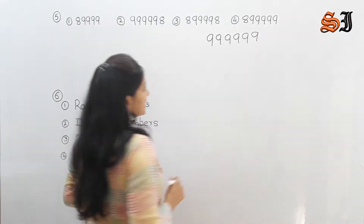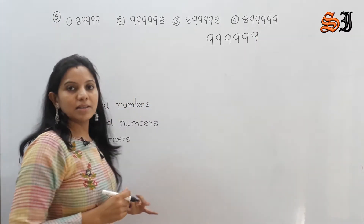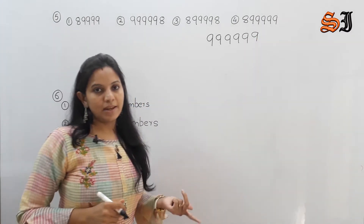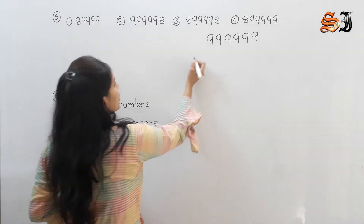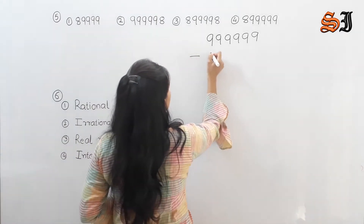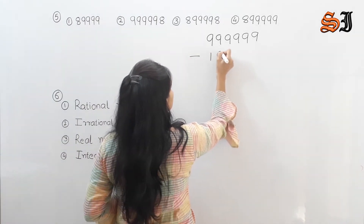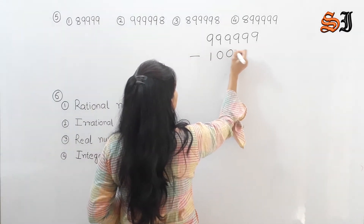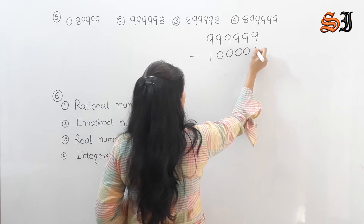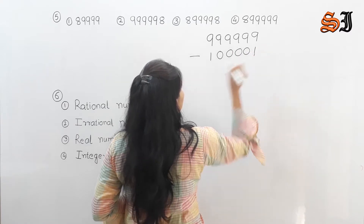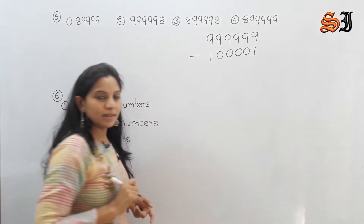First, greatest 6-digit number — 6 nines, right? Smallest 6-digit odd number is 100001.